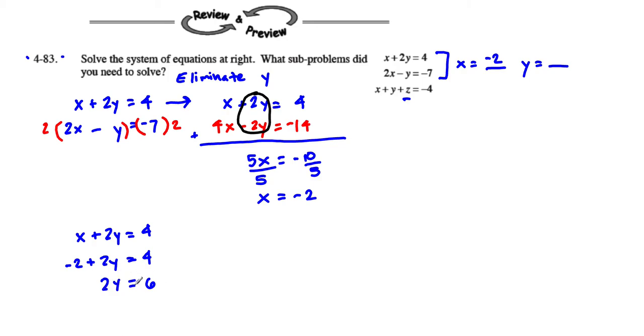So I know that 2y is going to equal 6. And I know then 2 times what number is 6. Well y has to equal 3. So then I know that y equals 3. There's my y value. There's my x value.